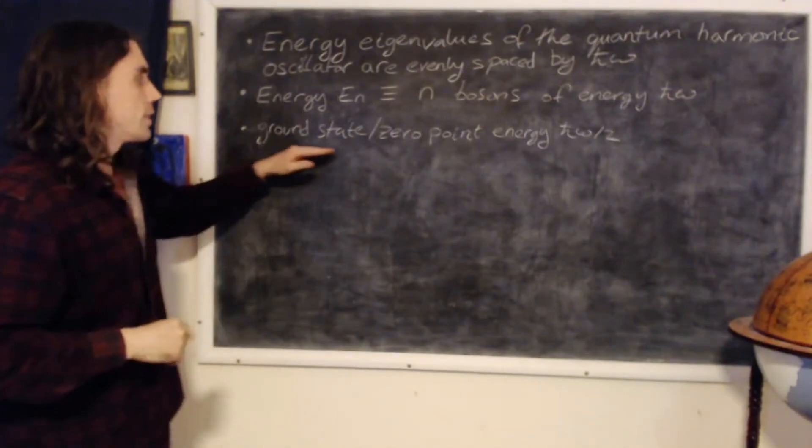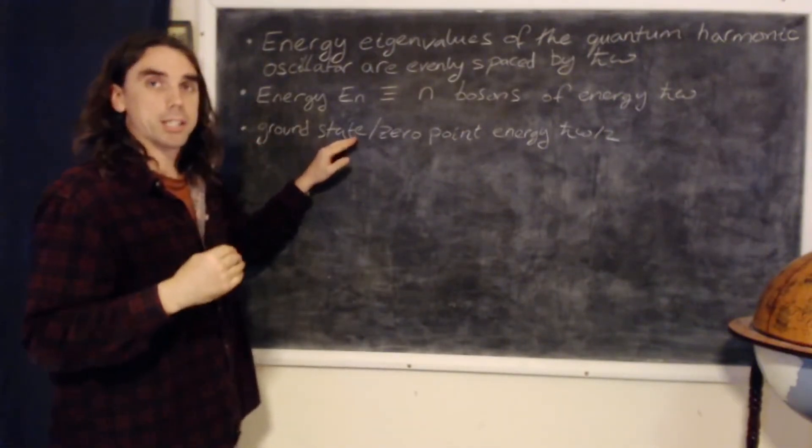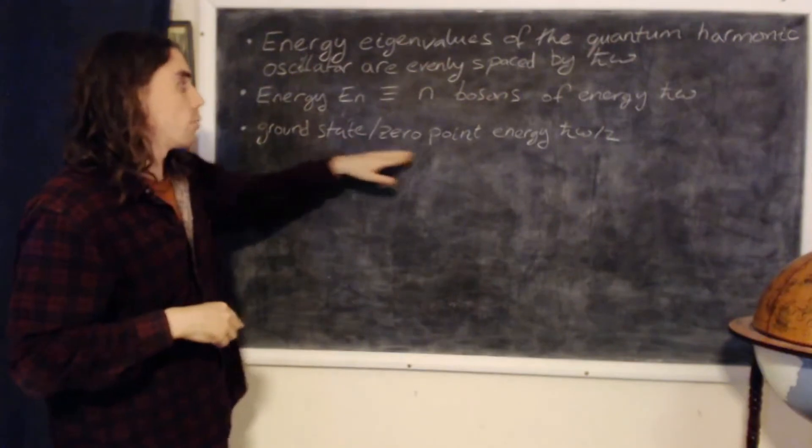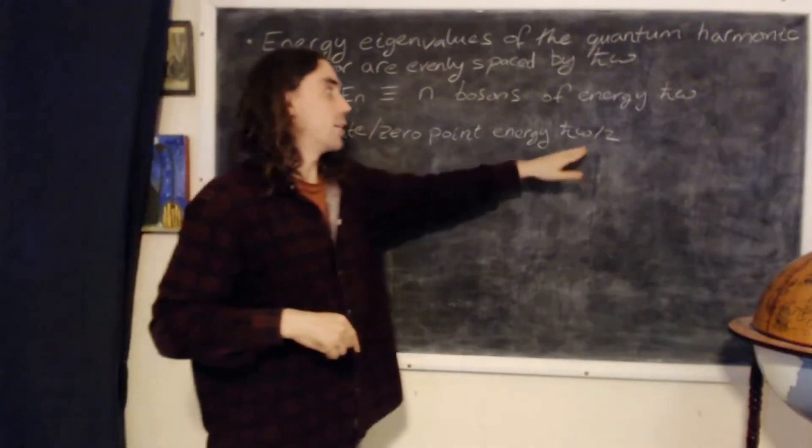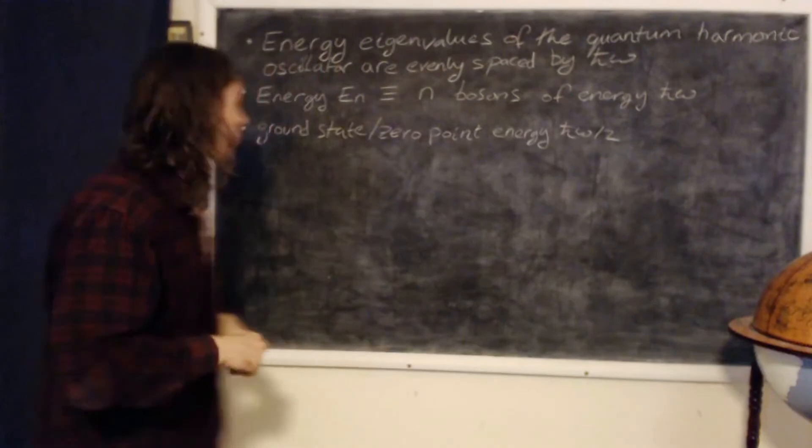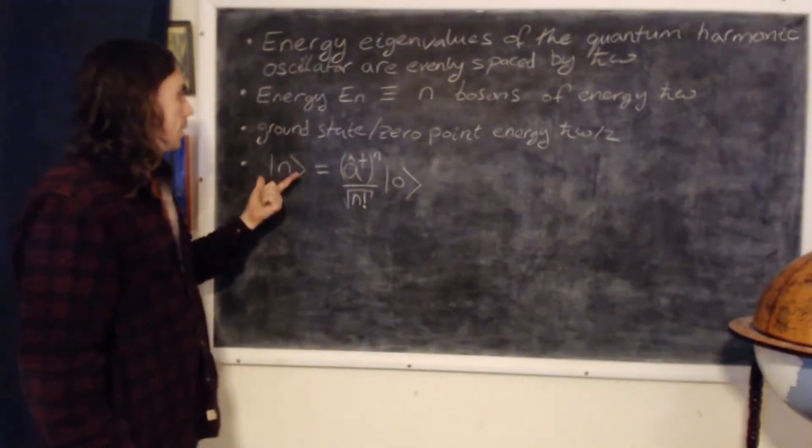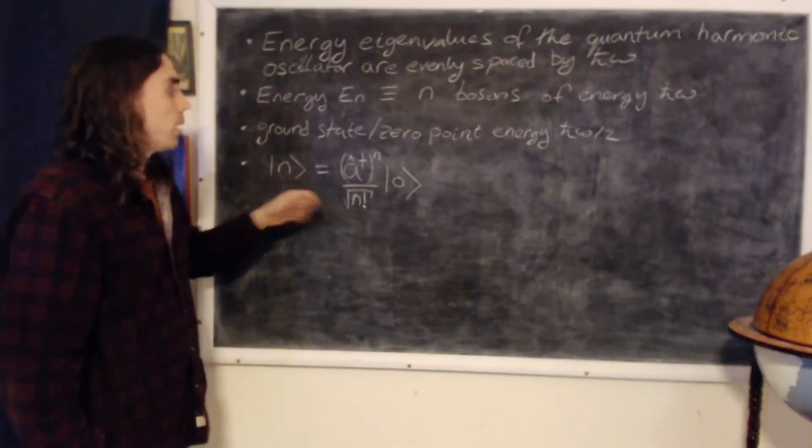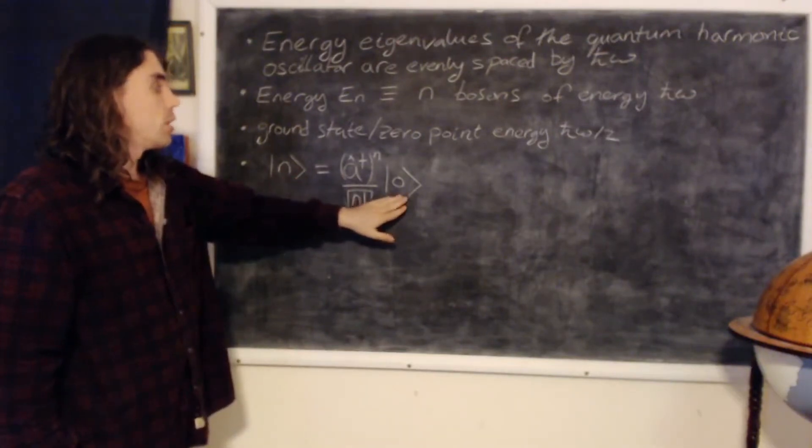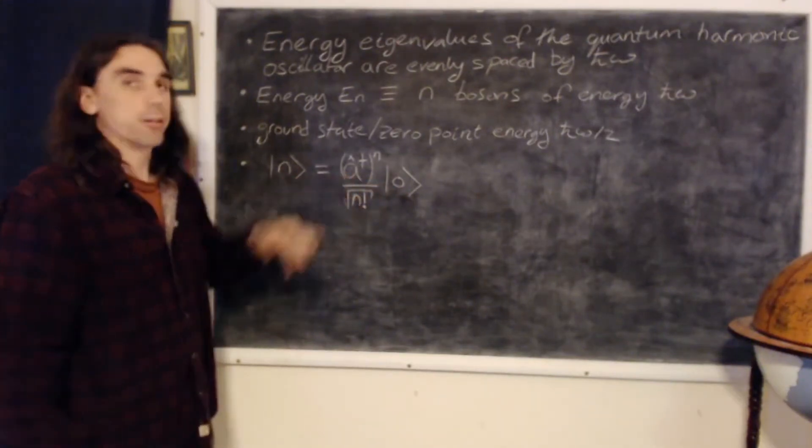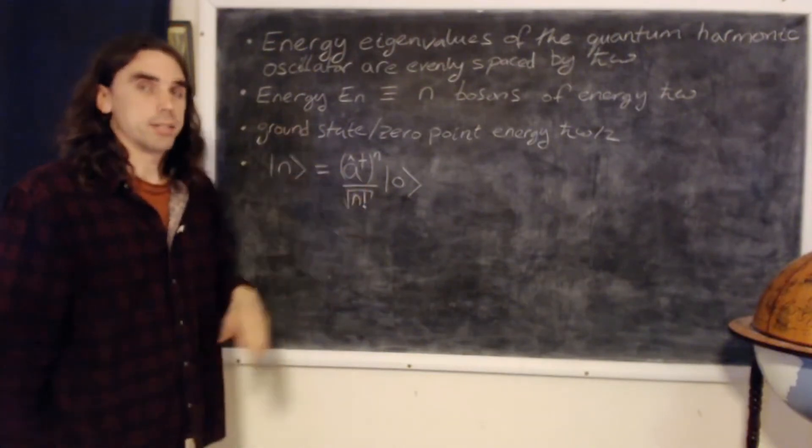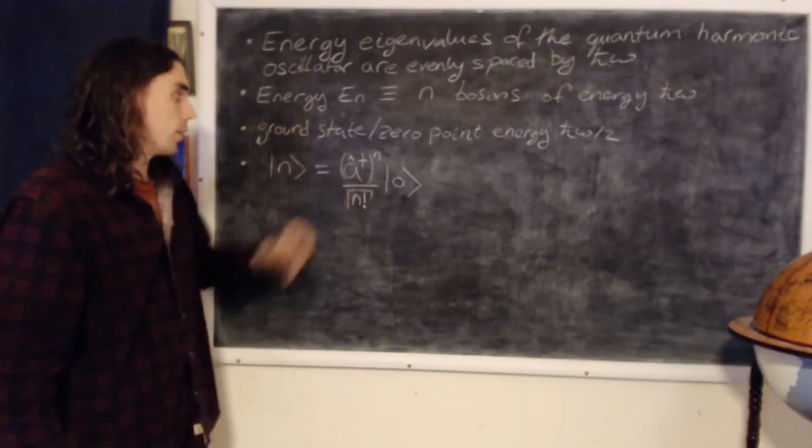The ground state of the system, the lowest possible energy is not zero. There's a zero point energy or a ground state energy, which is equal to h bar omega over two. And we can express the eigenstate n by the ground state zero acted on n times by creation operators a dagger. And similarly, we can lower the state using lowering operators.